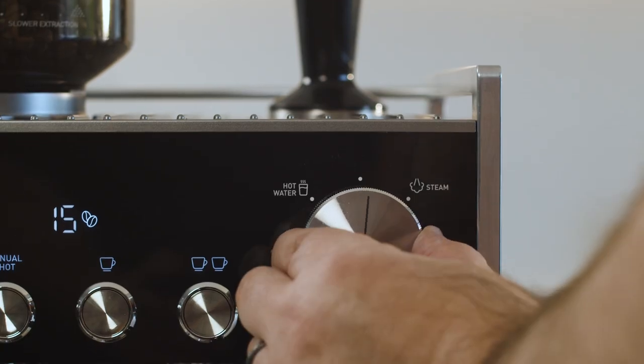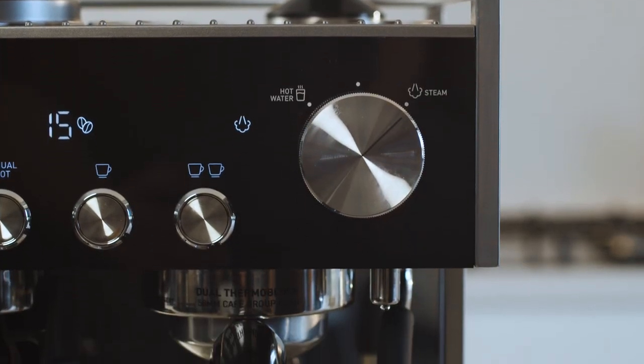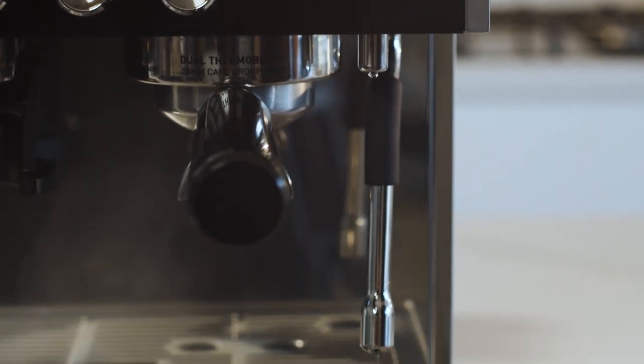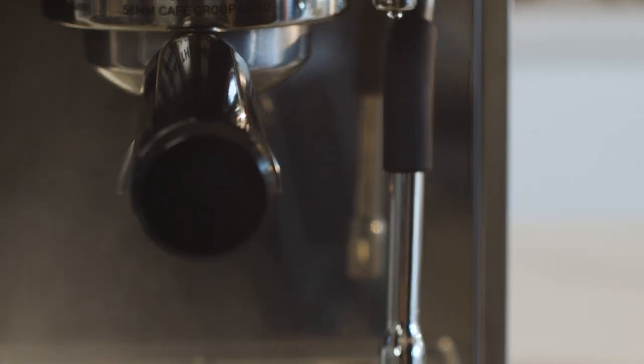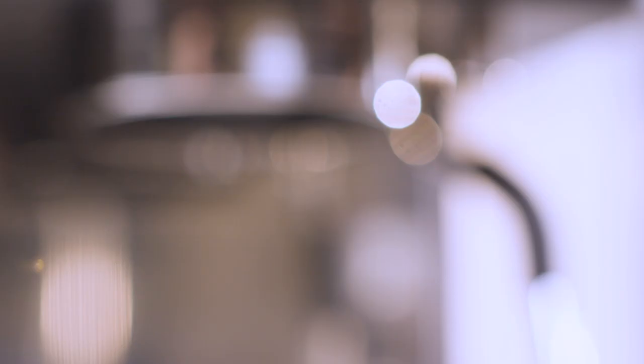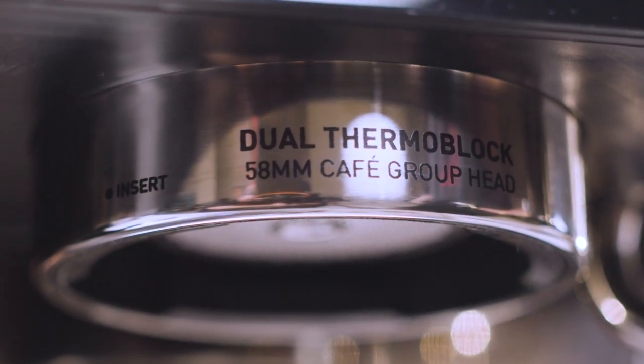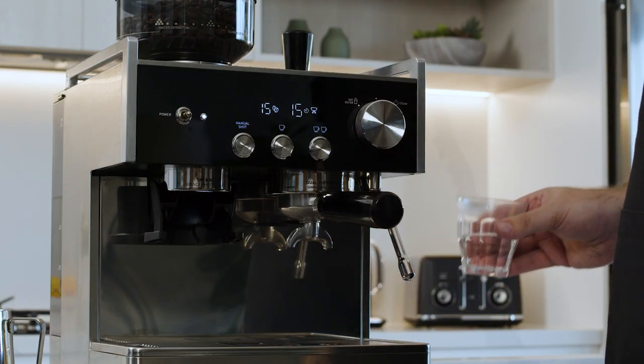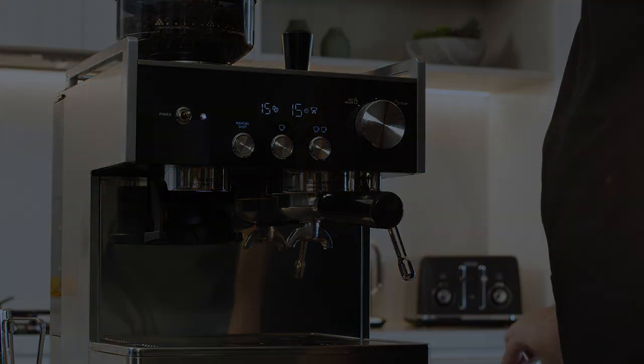To prime the steam wand, rotate the dial to the steam position and let the steam run through for around 20 seconds. Then return the dial to the center position. As this machine has a dual thermoblock, you could do these steps simultaneously. The coffee machine is now primed and ready for use.